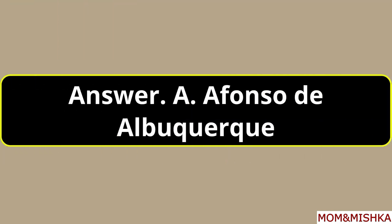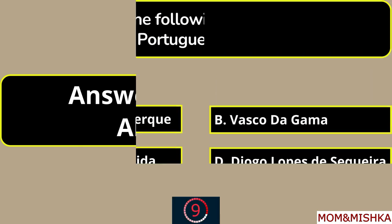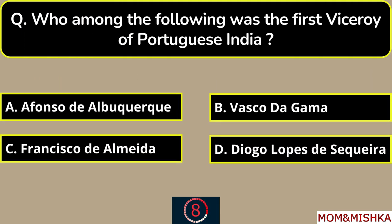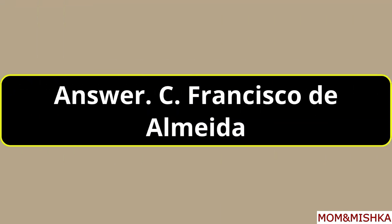Which of the following Portuguese governor captured the Goa city from the Adil Shahis? Afonso de Albuquerque, option A. Who among the following was the first viceroy of Portuguese India? Francisco de Almeida, option C.